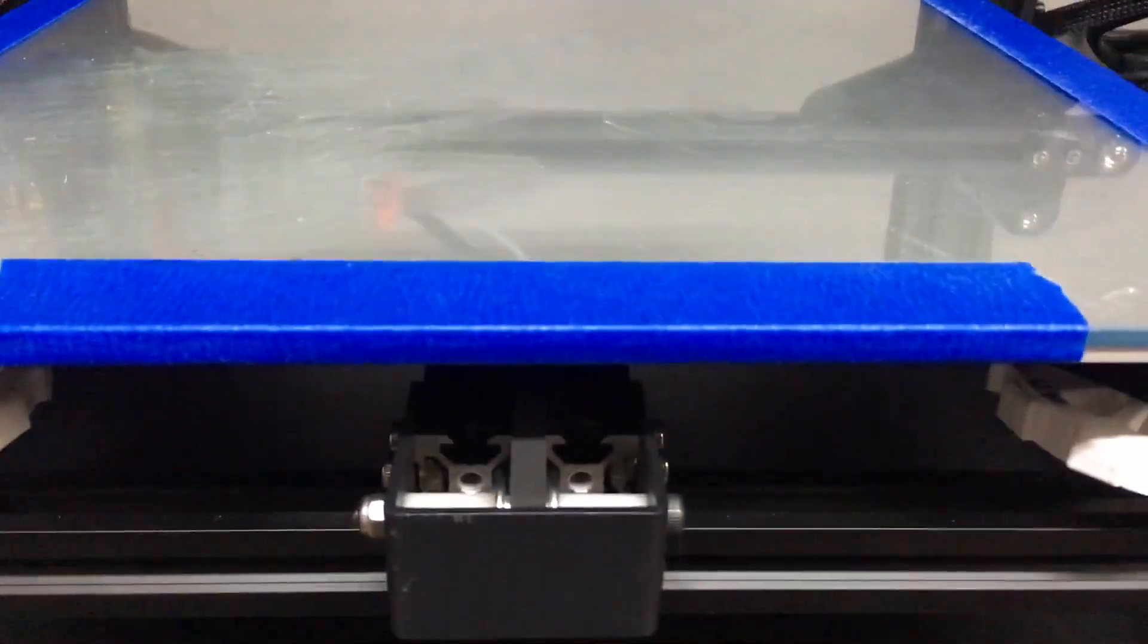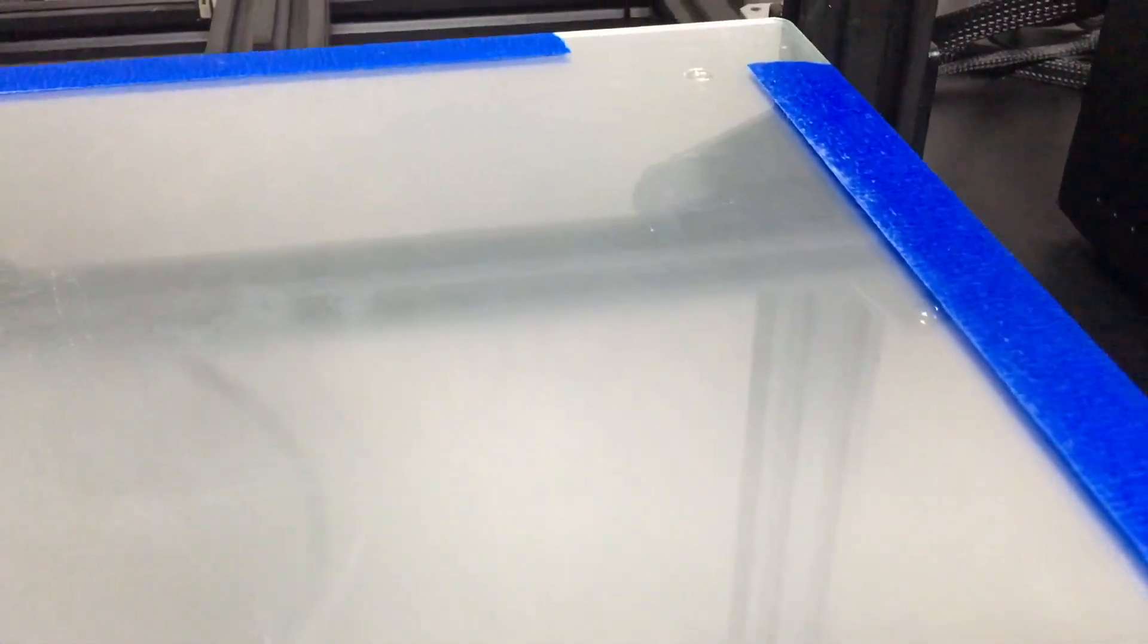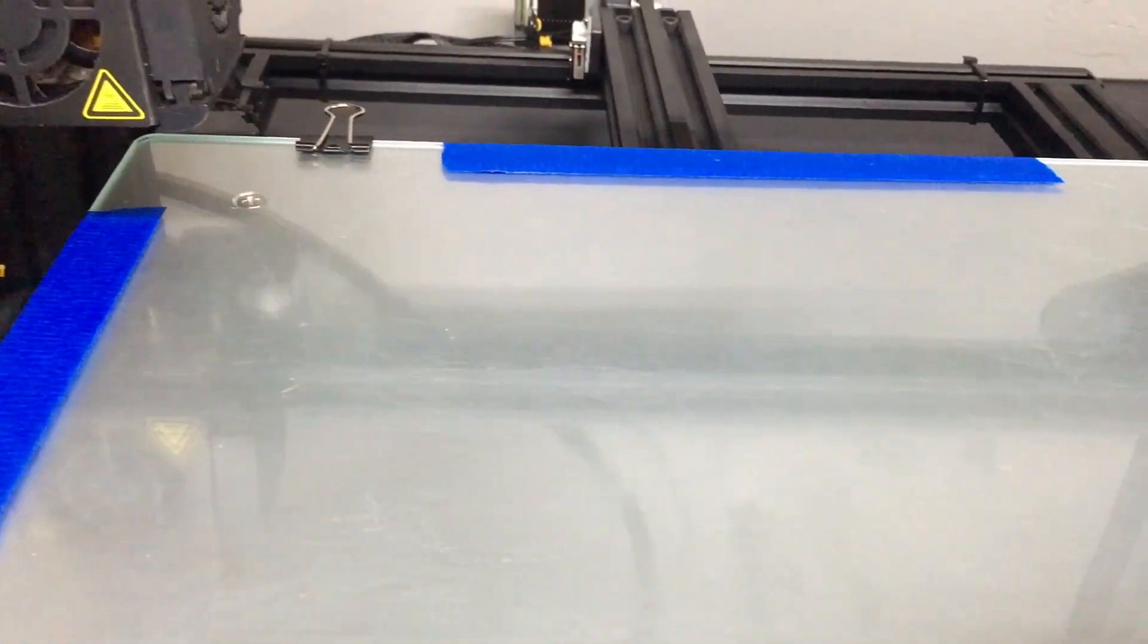So the easiest way to do it, and this is what I'm actually doing from now on. I don't really use clips anymore. Just tape up the four corners. Unless you're printing a super big model, the tapes are not going to get in the way.